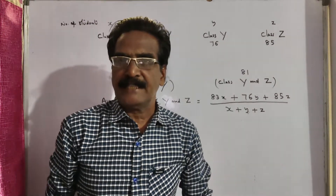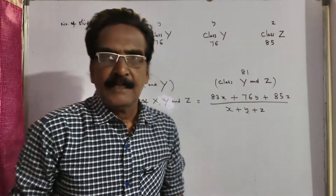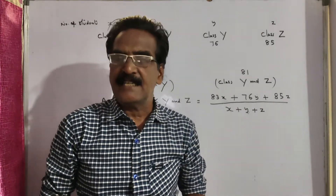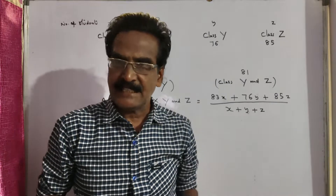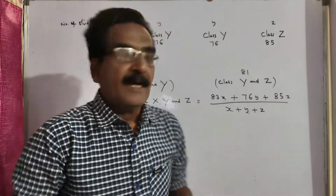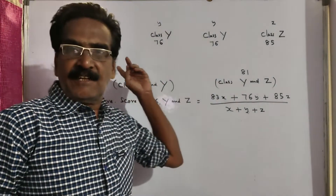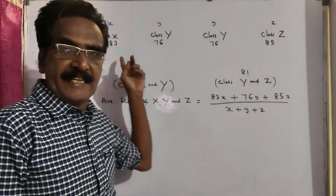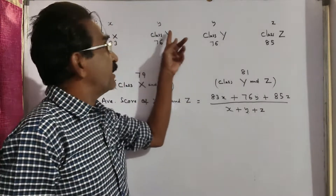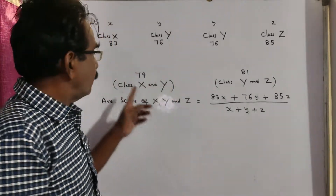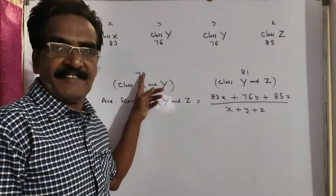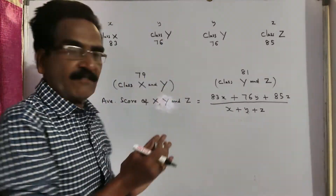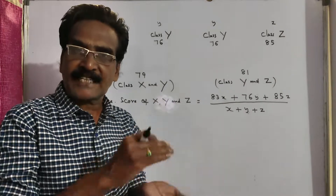Hi friends, good morning. Please look at the next problem in the average chapter. Three classes X, Y and Z take an algebra test. The average score of class X is 83, average score of class Y is 76, and the average score of class X and Y combined is 79. Here, we know class X, we know class Y, and we know the combined average of class X and Y.